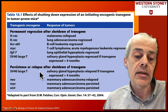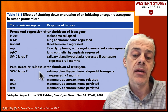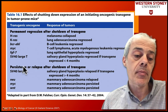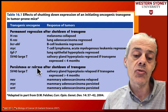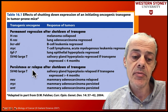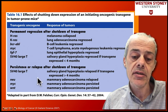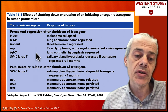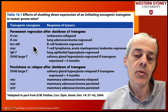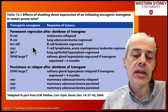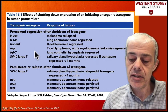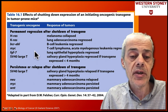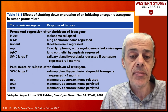Sometimes you can get persistence or relapse after shutting down some of these early genes. There's no simple solution, but it clearly does make sense to target these players in the pathways.